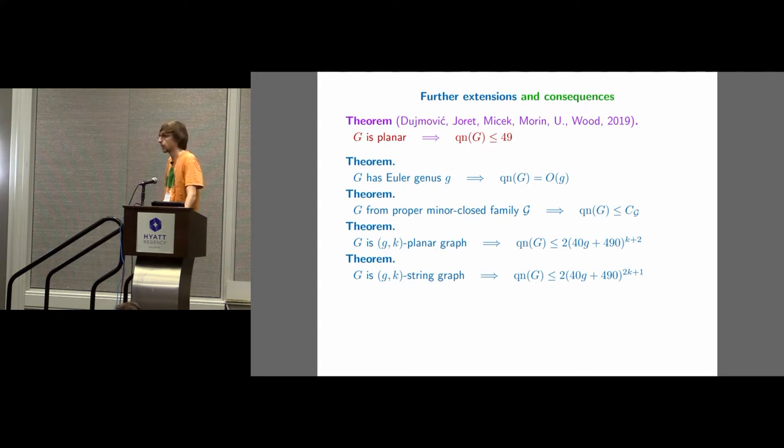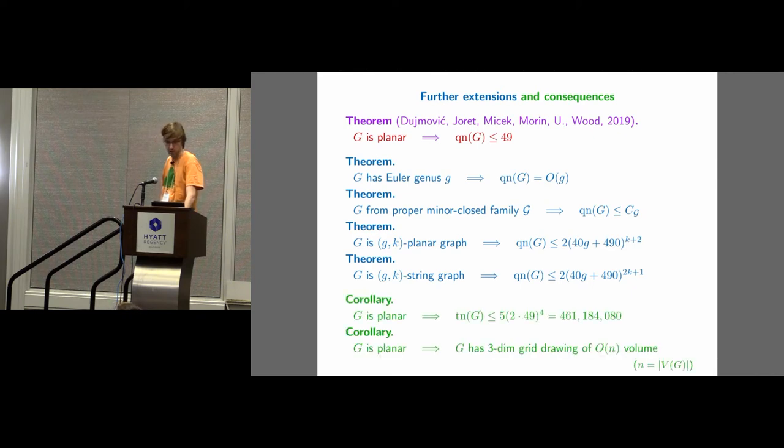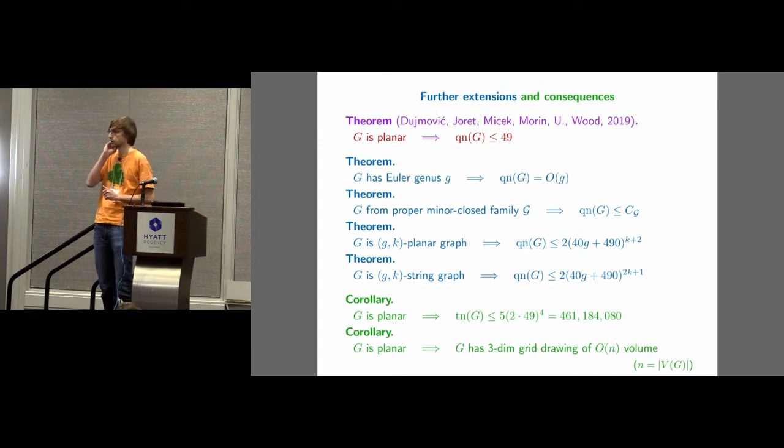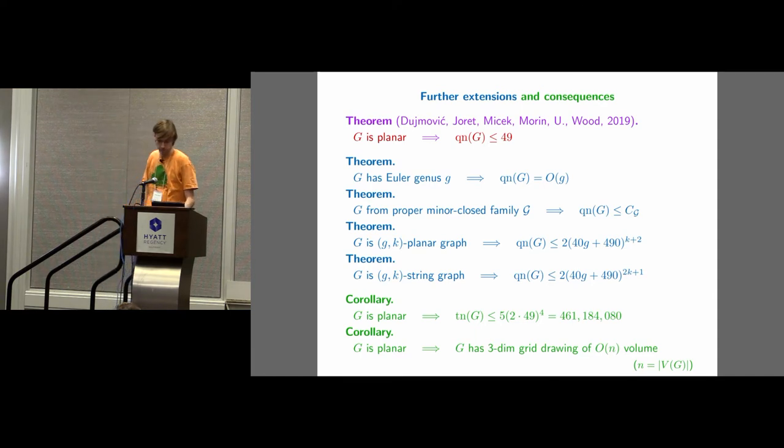Actually, for every proper minor closed graph class, there is a constant such that all the Q numbers in this graph class is at most this. And then also, for some non-minor closed graph classes, like K-planar graphs, K-string graphs, there is a constant. Then, if you have a bounded Q number, then from this you can derive, this is not our work, but we just apply it here, you can derive that your graph also has a bounded track number. So, just plugging in our 49 into the existing bound, we get a track number of at most 461 million, roughly. But it's constant for every planar graph, and also that there is linear volume 3D grid drawings of planar graphs, which has been conjectured a long time ago.